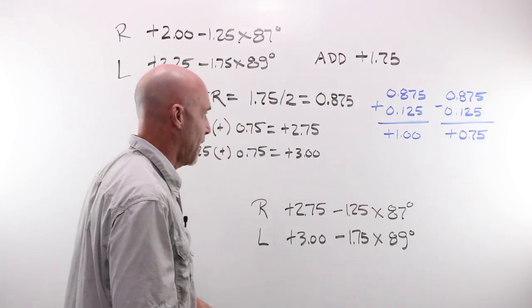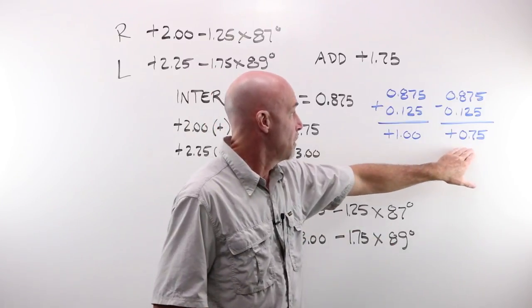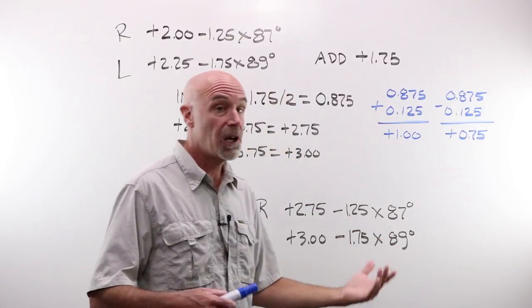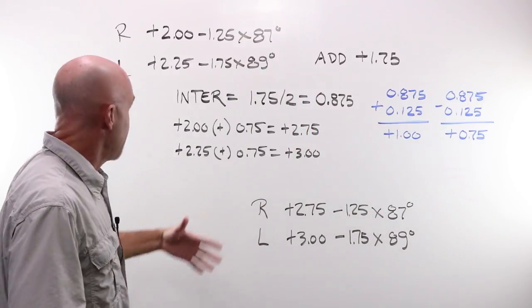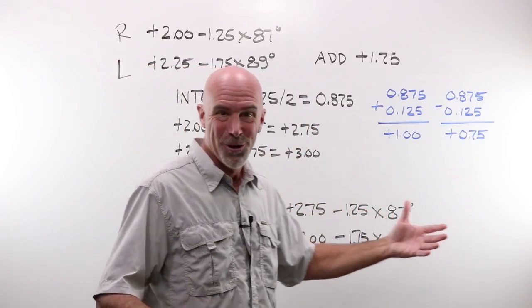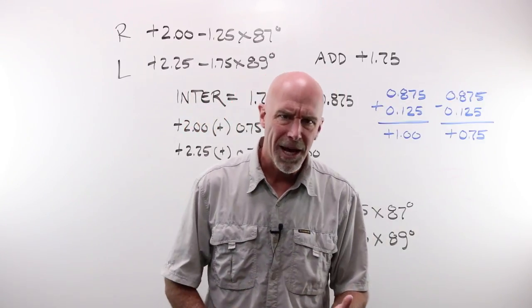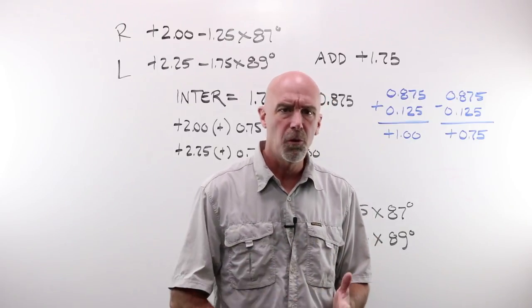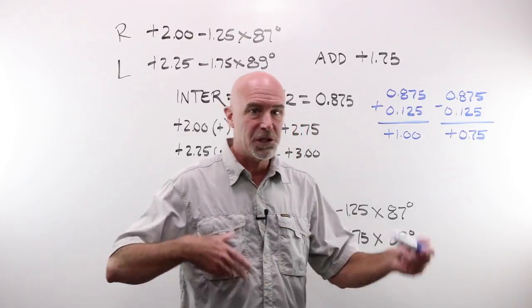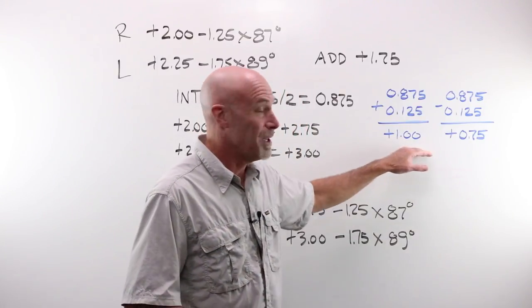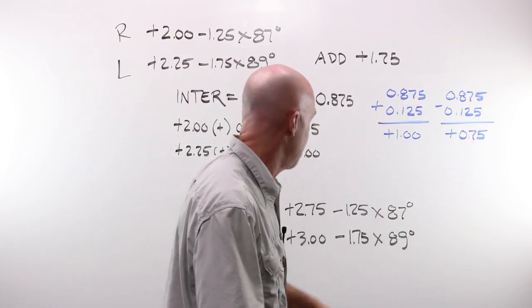I would choose my +0.75 because that follows my favorite rule, which is under plus and over minus. If I sat down, which of course I would, and have a nice long conversation with this person, addressed about past glasses, what they use them for, if they've had any special needs, if they've had problems before, good dispensing talk, I may decide to go with a +1.00. It's really your decision to make as an optician. But I went with a +0.75.